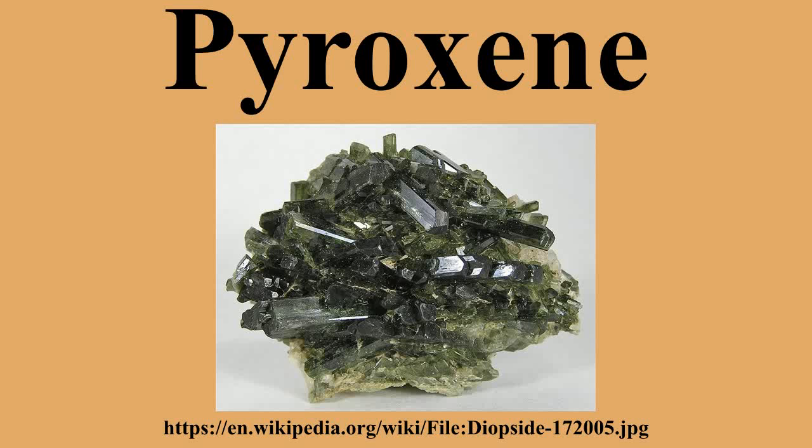The upper mantle of Earth is composed mainly of olivine and pyroxenes. A piece of the mantle is shown at right — it is bright green, and olivine is yellow-green, and is dominated by olivine, typical for common peridotite. Pyroxenes and feldspar are the major minerals in basalt and gabbro.